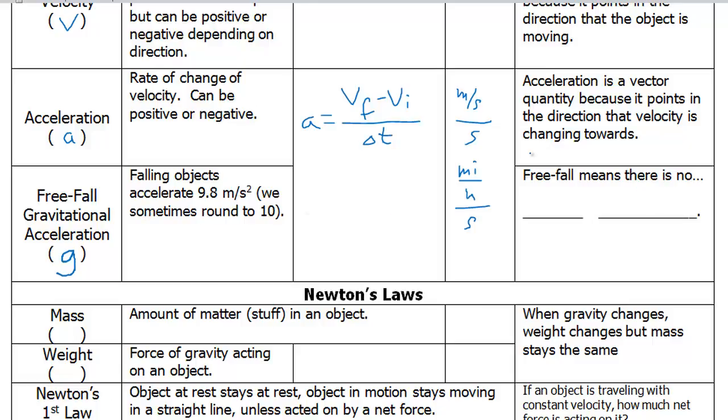Free fall means there is no air resistance. The object will continue to get faster and faster and faster. If there is air resistance, it will reach what we call a terminal velocity where the air resistance is balanced by the force of gravity and the object maintains a constant speed and does not continue to accelerate.